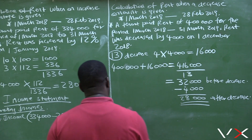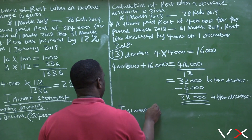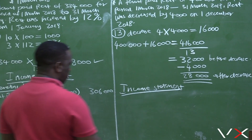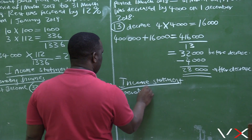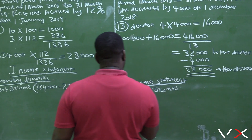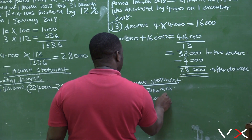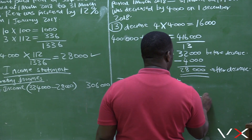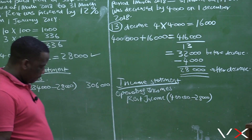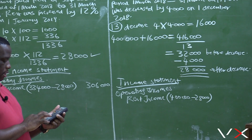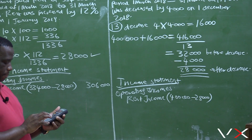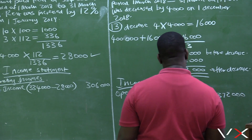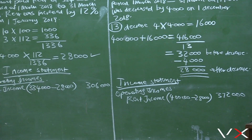So how is this going to be recorded in the income statement? Under operating incomes, you will have your rent income. The total amount received is four hundred thousand, and then minus twenty eight thousand, which is income received in advance. So four hundred thousand minus twenty eight thousand equals three hundred and seventy two thousand. Your rent income amount will be three hundred and seventy two thousand.